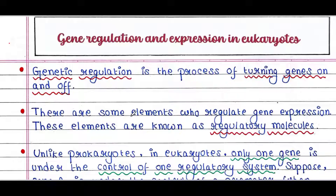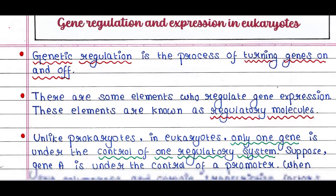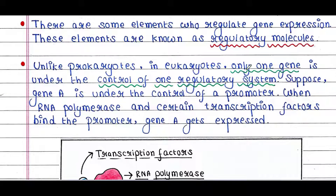There are some elements that regulate gene expression, known as regulatory molecules. Unlike prokaryotes, in eukaryotes only one gene is under the control of one regulatory system — a single gene is under the control of a single promoter, and each gene gets expressed to generate its own mRNA, which encodes a single protein. But in prokaryotes, many genes might be under the control of a single promoter and generate a single mRNA, which encodes multiple proteins.